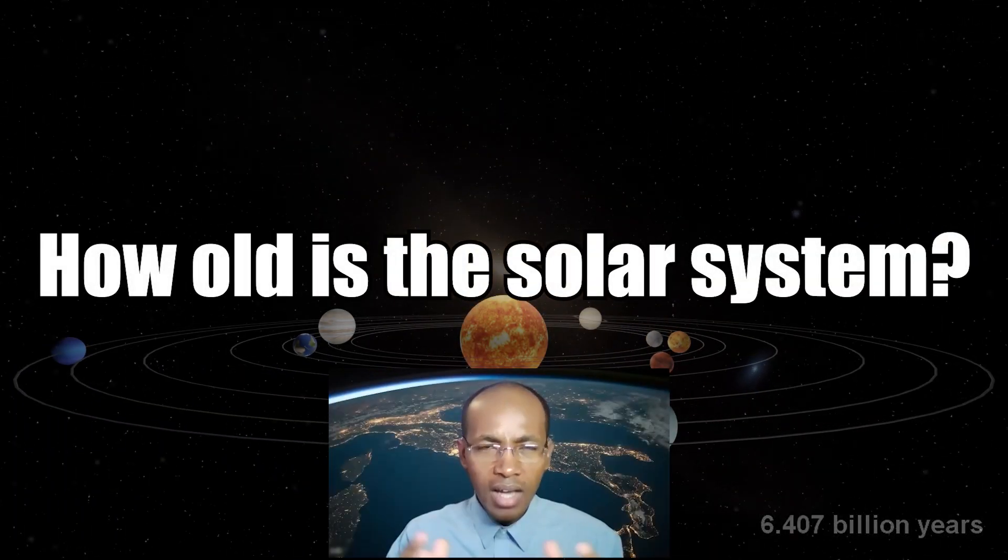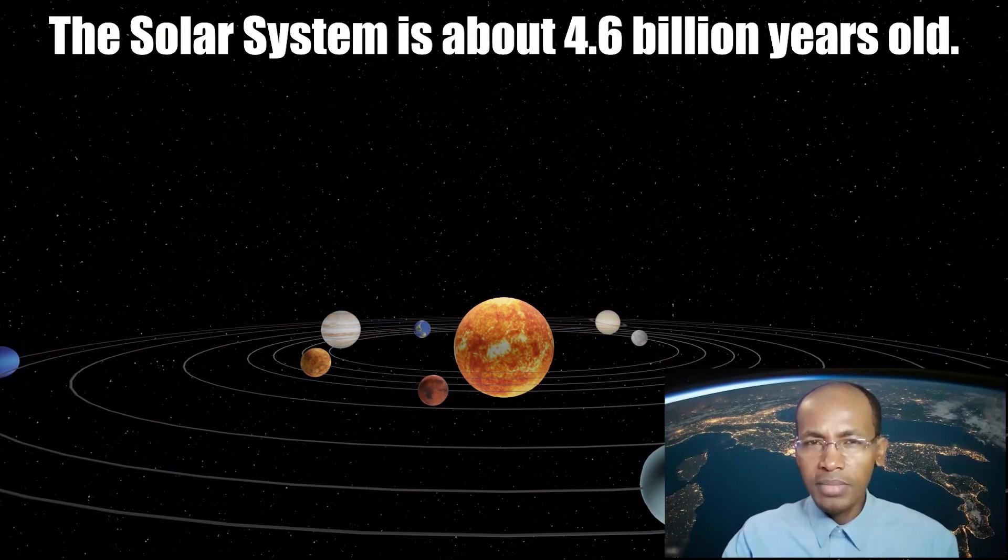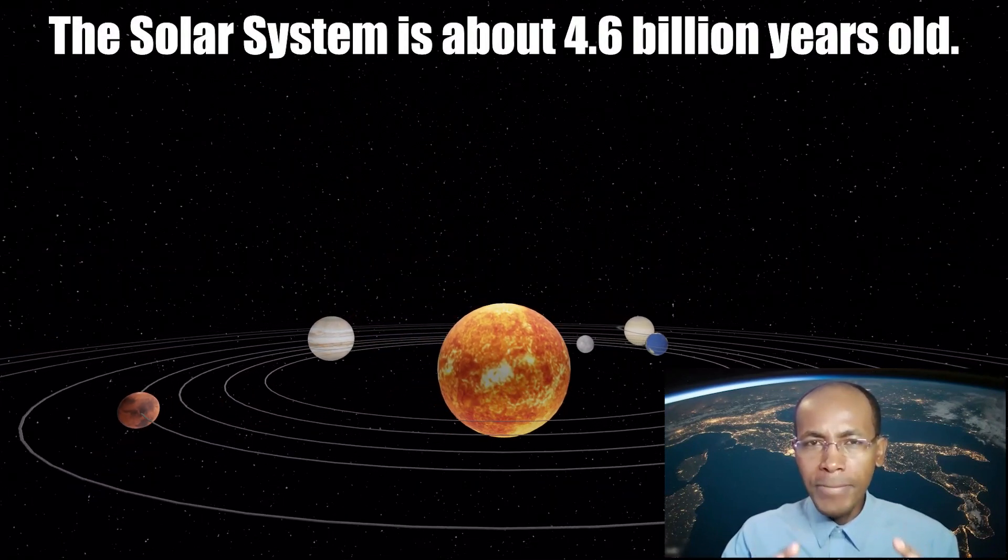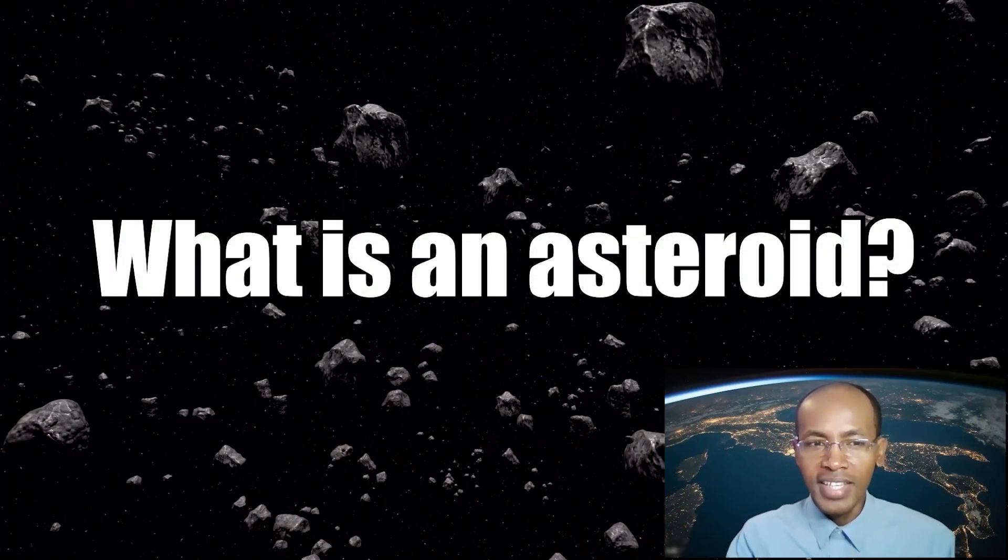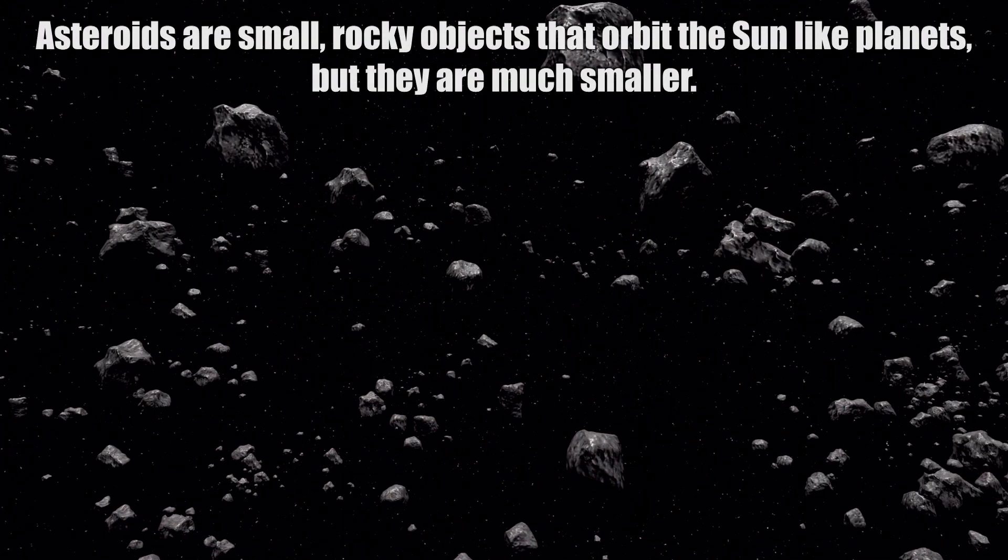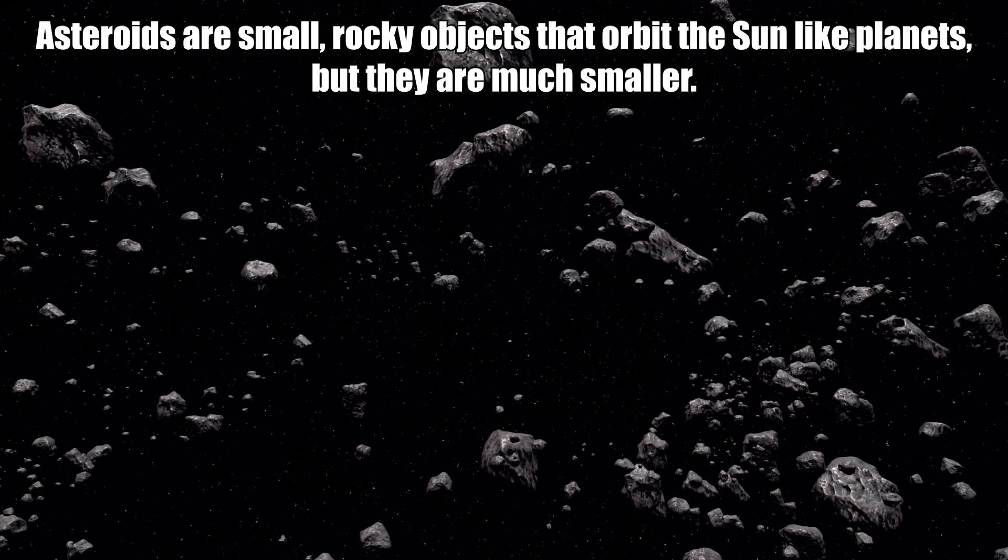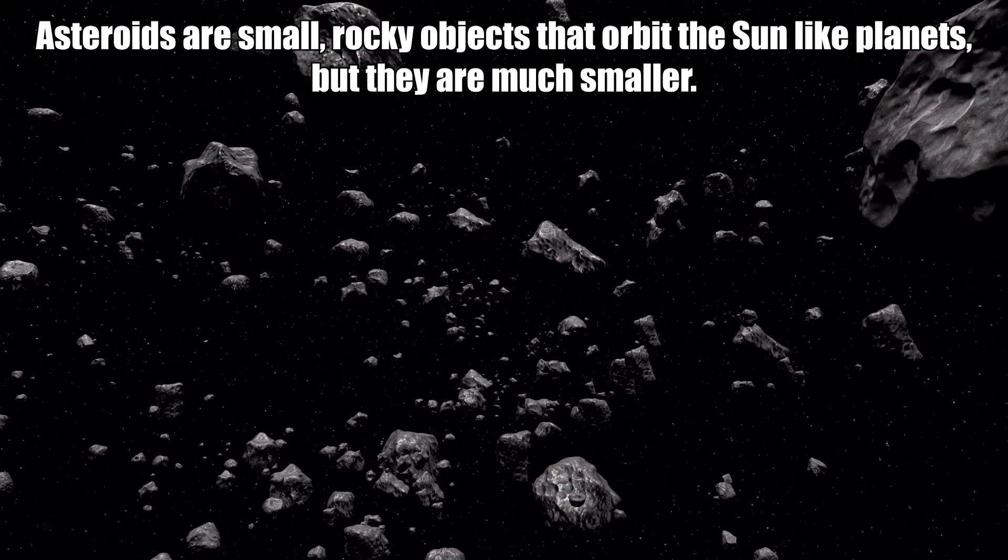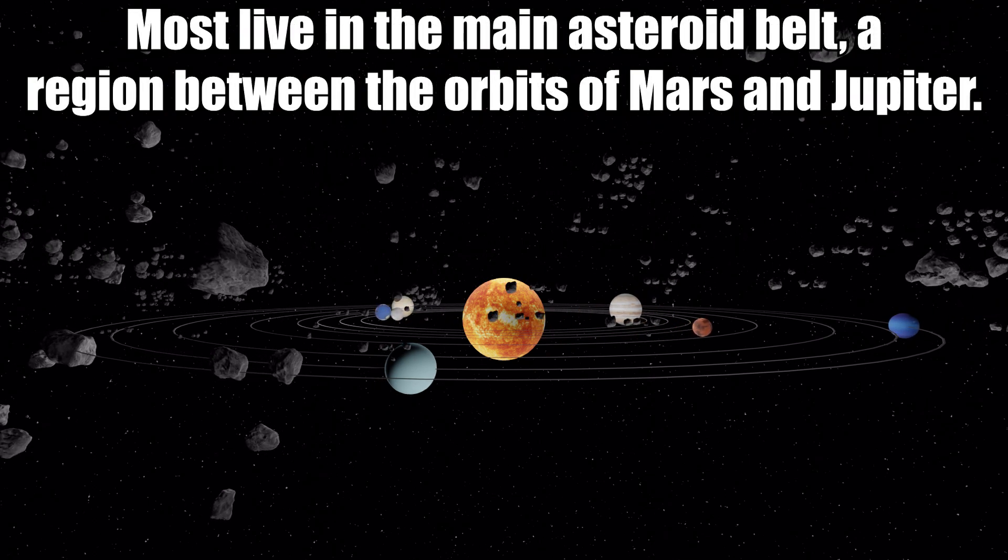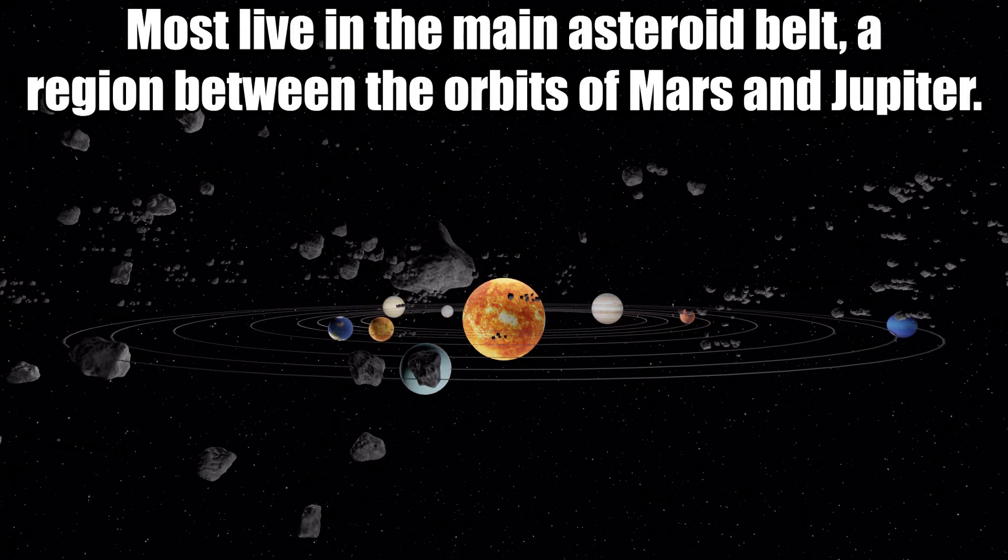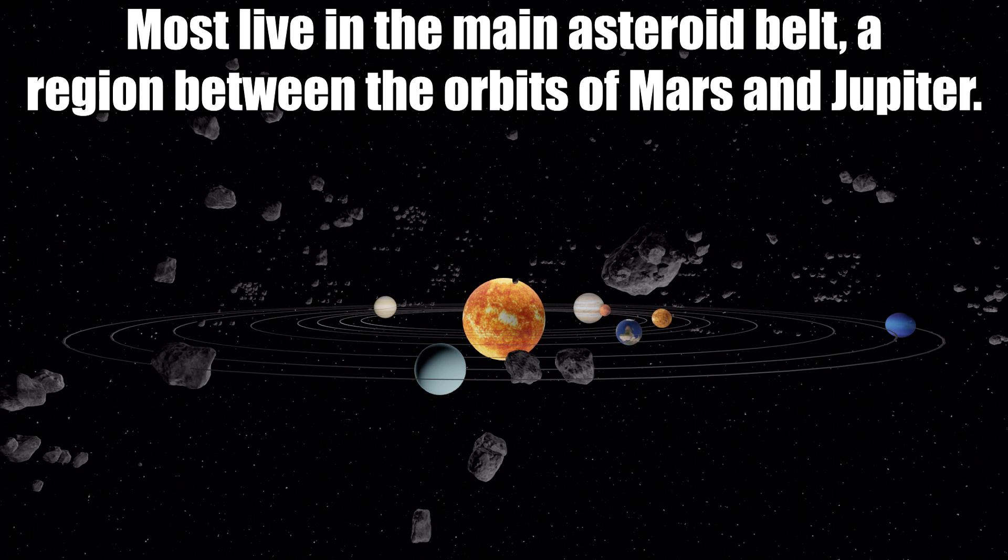Next question, how old is our solar system? Our solar system is about 4.6 billion years old. Next question, what is an asteroid? Asteroids are small rocky objects that orbit the sun like the planets, but they are much smaller. Most live in the main asteroid belt, a region between the orbits of Mars and Jupiter.